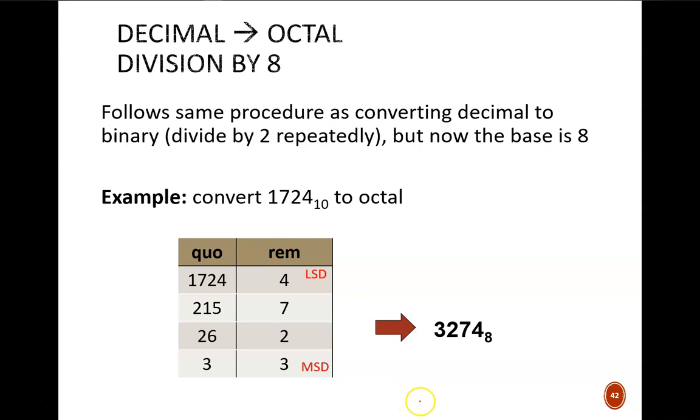One last note, when I use my calculator in standard mode, I don't directly see the remainders that are listed in this table. For example, 215 divided by 8 shows 26.875. The 26 gets placed in the left column, but how do I know it is a 7 that goes in the right column? I take the mantissa, 0.875, and multiply it by 8.